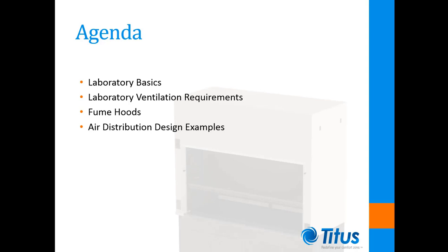We'll start out first with what labs are and how HVAC systems support their goals and objectives. From there we'll move on to ventilation requirements. We'll follow this up with a closer look at fume hoods, their use, and how air distribution can affect their performance. Lastly, we'll cover the different lab classifications resulting from these ventilation requirements and work through three examples of air distribution designs.